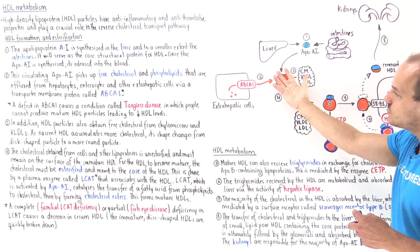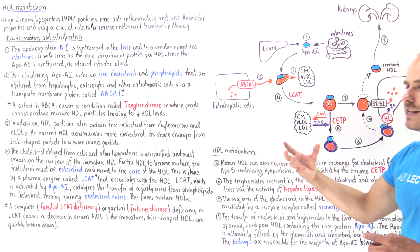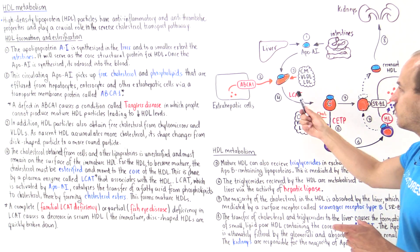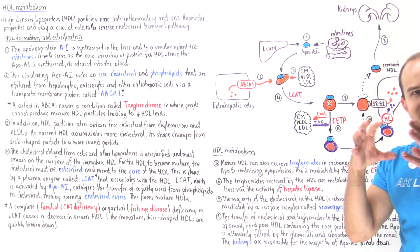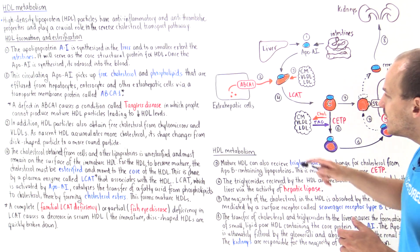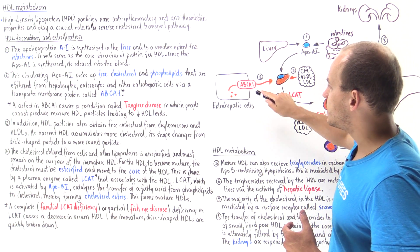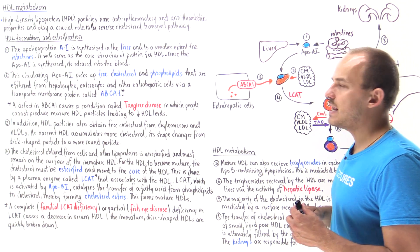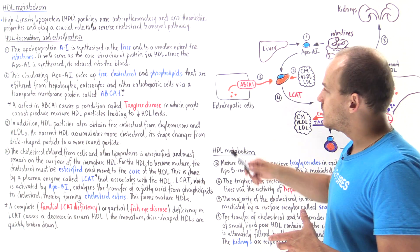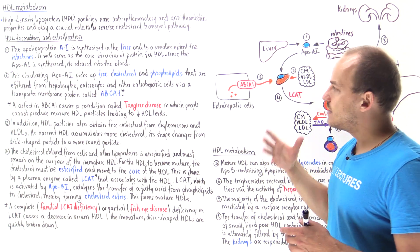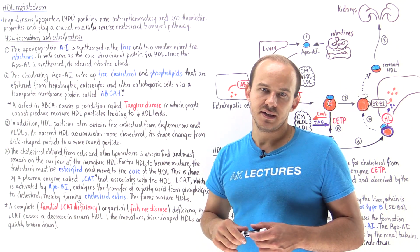Initially, we create this immature nascent HDL molecule that contains a relatively disc-like shape. Now, if we have a mutation in the ABCA1 protein, this becomes dysfunctional. This is what we call Tangier's disease.